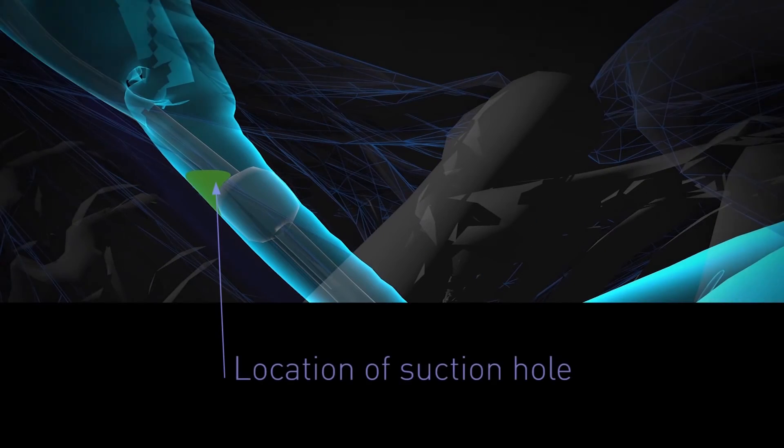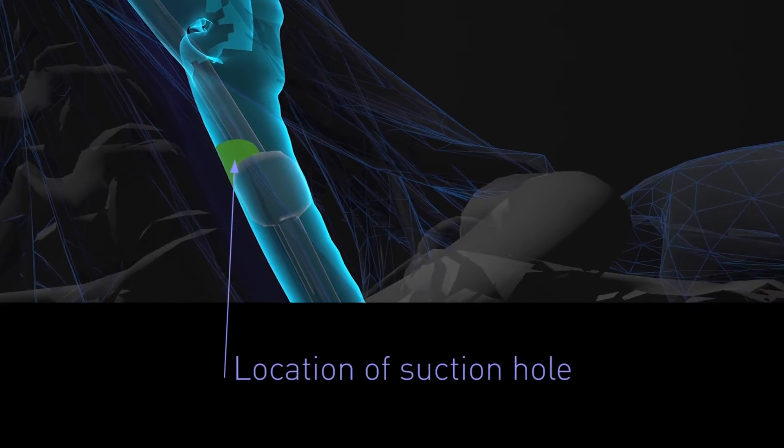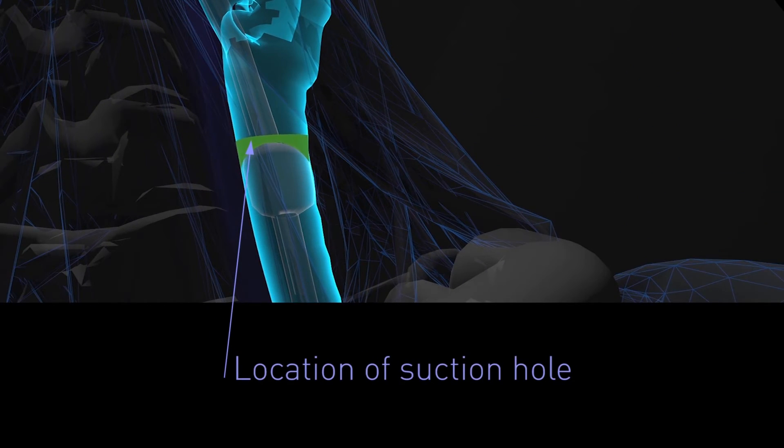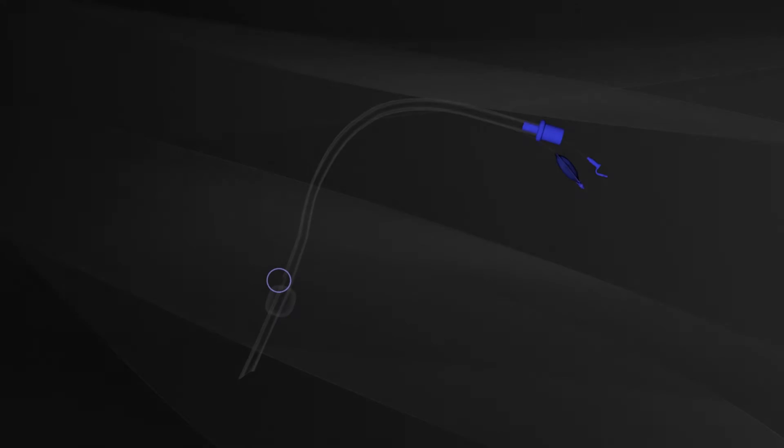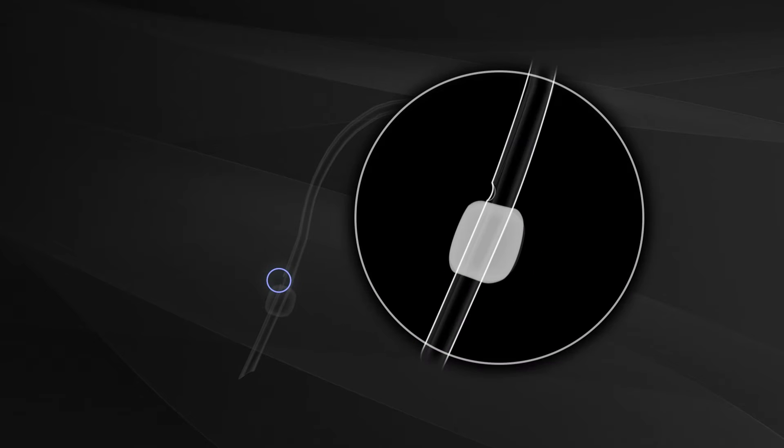The location of the suction hole above the balloon cuff can impact the amount of secretions aspirated through the suction port. In most subglottic endotracheal tubes, the suction hole is located in the dorsal position, as close to the balloon cuff as possible for maximum secretion removal.